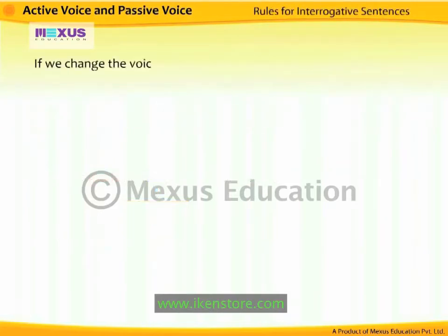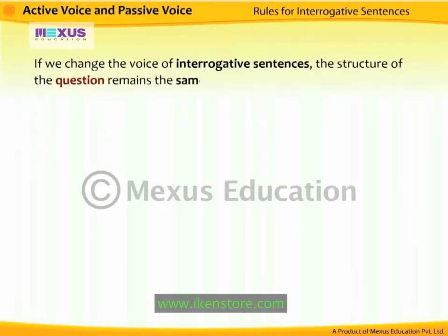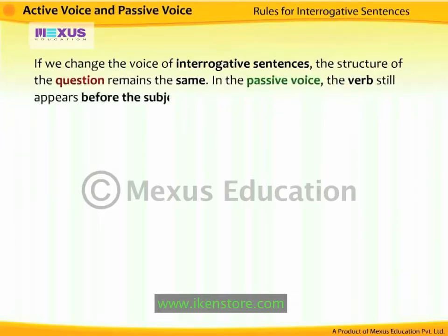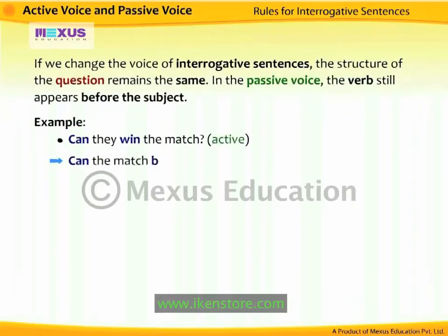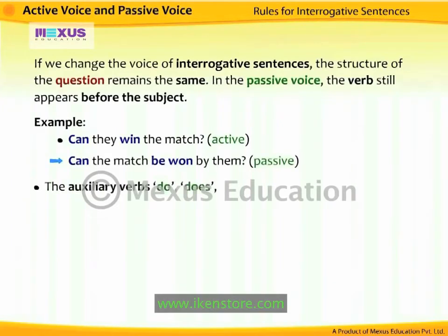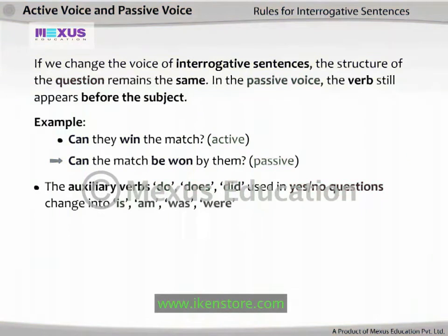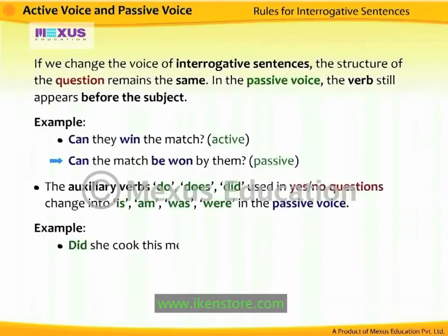If we change the voice of interrogative sentences, the structure of the question remains the same. In passive voice, the verb still appears before the subject. For example, 'Can they win the match?' becomes 'Can the match be won by them?' The auxiliary verbs Do, Does, Did — used in yes or no questions — change into Is, Am, Was, Were in passive voice. For example, 'Did she cook this meal?' becomes 'Was this meal cooked by her?'